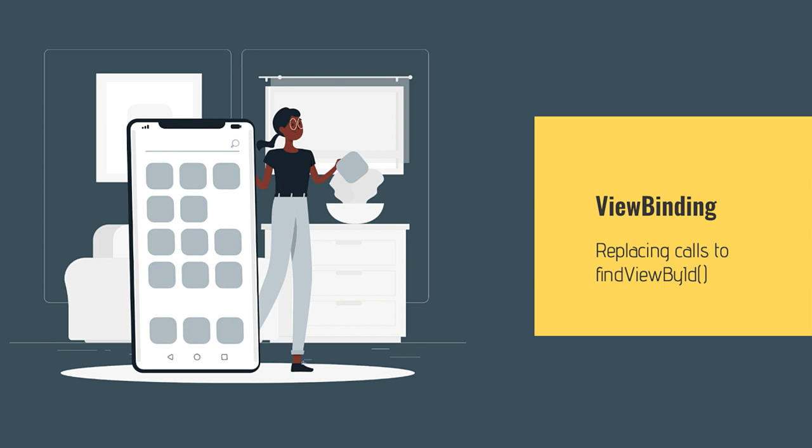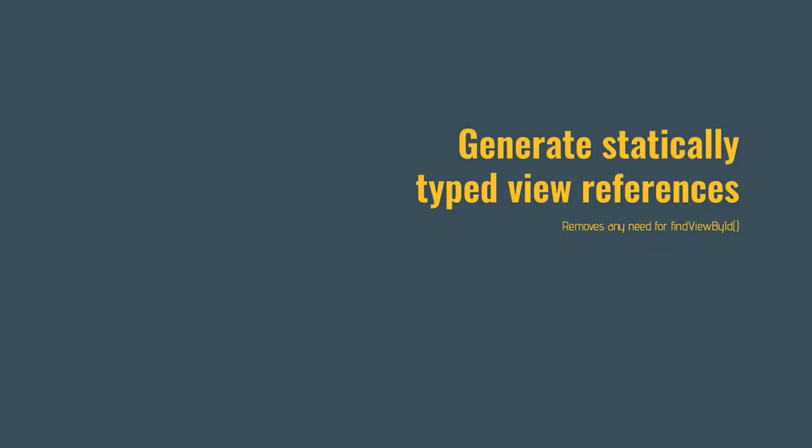Let's jump into view binding. What exactly is view binding? View binding is really new functionality within Android, becoming popular in the past year. Effectively, what view binding does is it's a compiler option that will generate statically typed view references for us. This essentially removes any need to call findViewByID within an activity or, in this case, a fragment.